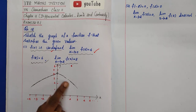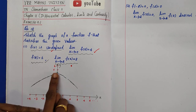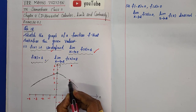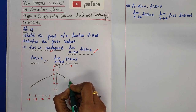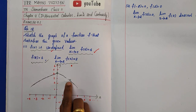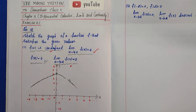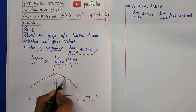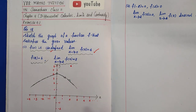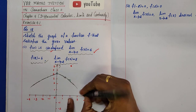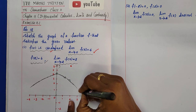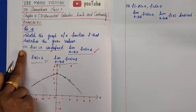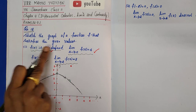The leftward approach to x equals 2 gives f(x) approaching 3, and the rightward approach also gives f(x) closer to 3. Since the limit equals 3 but f(2) equals 6, we place an open circle at the point (2, 3) to show the function approaches but does not equal 3 there. This completes the graph satisfying all 4 conditions.